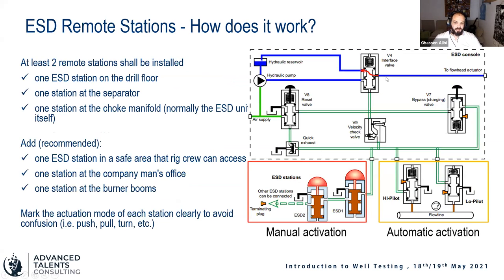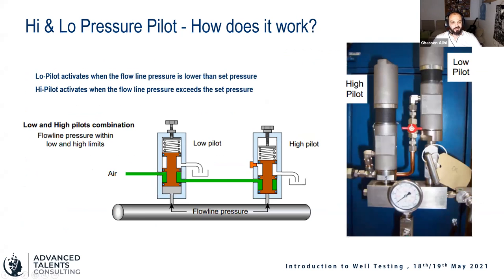Inside the high-low pilot there is a piston with O-rings and a path for air to flow through. Depending on how the air hoses are connected — to the top or bottom of the canal — you configure it as a high or low pilot. By turning the top cover up or down, you increase or decrease the spring tension that pushes the piston up or down, setting the high or low pressure trip point.